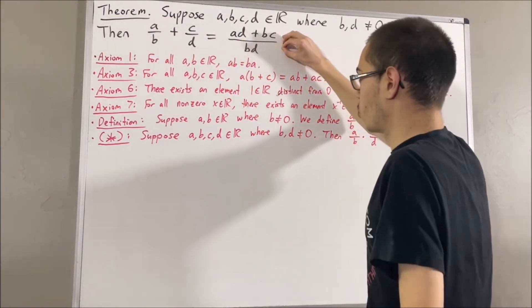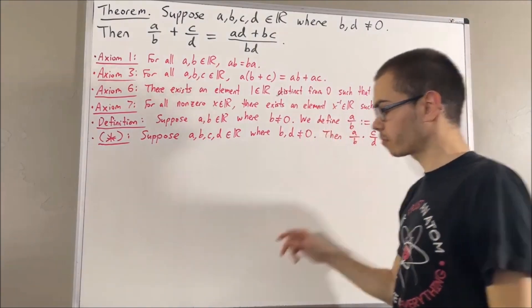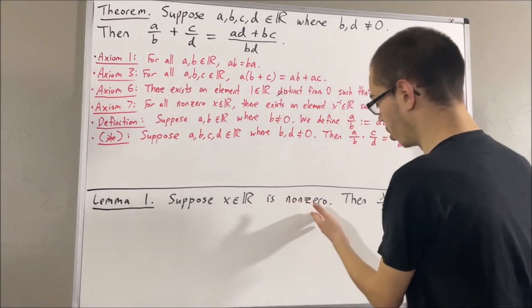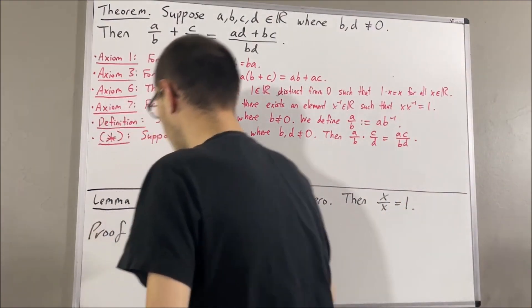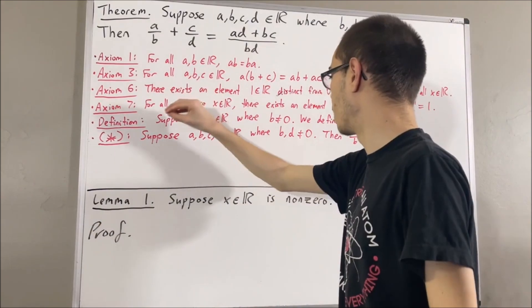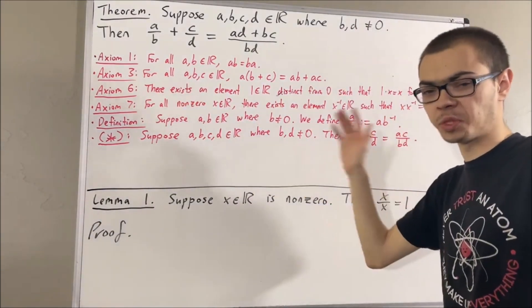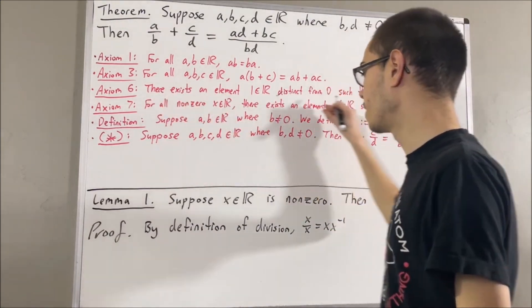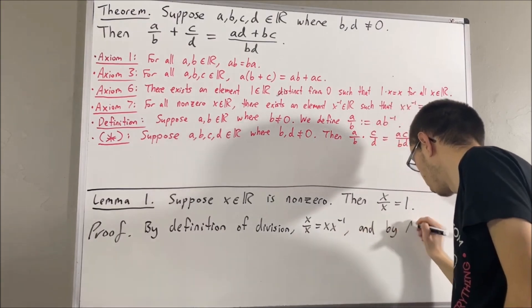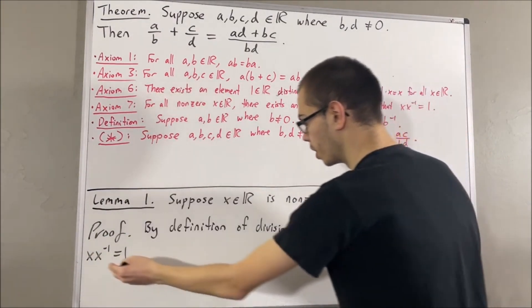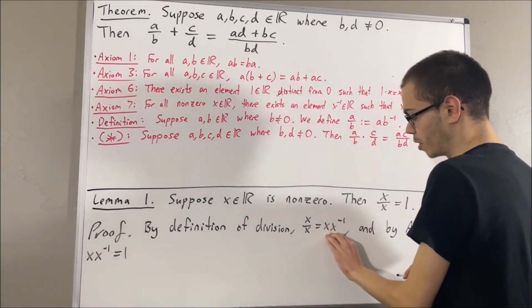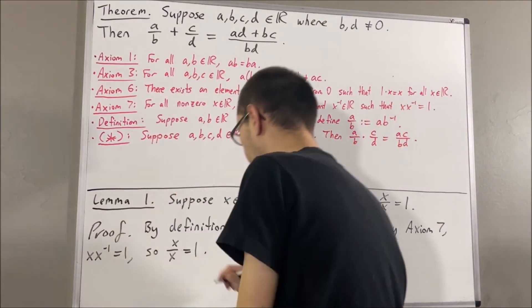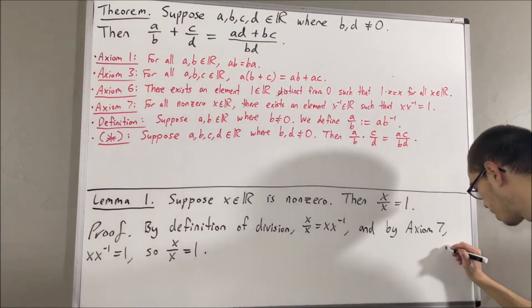Before we prove this, we're first going to prove two preliminary results. Here's the first one. To prove this, first, by definition of division, we have x over x is equal to x times the reciprocal of x. And, by axiom 7, x times the reciprocal of x is equal to 1. So, putting these two equalities together, x over x equals x times the reciprocal of x, and x times the reciprocal of x is equal to 1, which tells us x over x is equal to 1. And that is exactly what we wanted to prove.